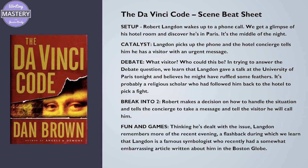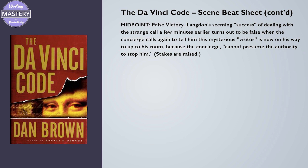Beat five: Fun and Games. Thinking he's dealt with the issue, Langdon remembers more of the recent evening in a flashback, during which we learn that Langdon is a famous symbologist who recently had a somewhat embarrassing article written about him in the Boston Globe. Beat six: Midpoint — False Victory. Langdon's seeming success of dealing with the strange call turns out to be false when the concierge calls again to tell him the mysterious visitor is now on his way up to his room.